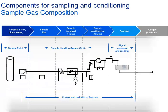Once the gas mixture is extracted and enters the sample line, it needs to be treated to measure accurately. Filters, pumps, solenoid valves for switching gas streams, coolers, and gas converters form a sample handling system that works reliably.